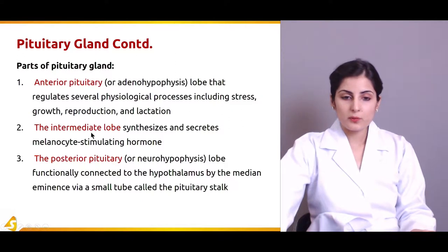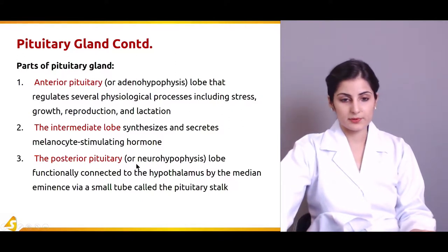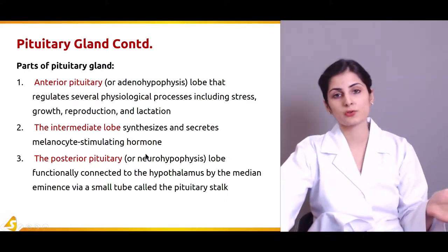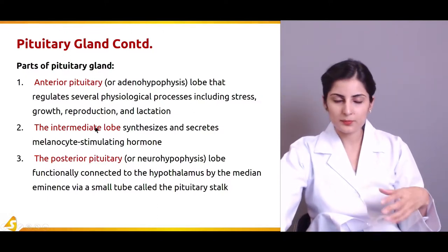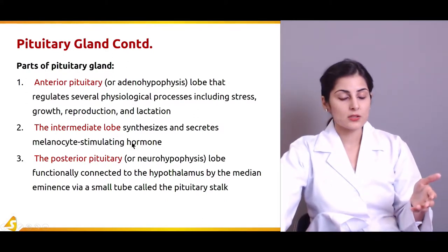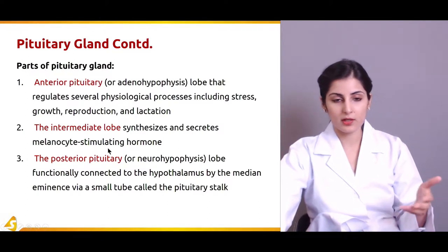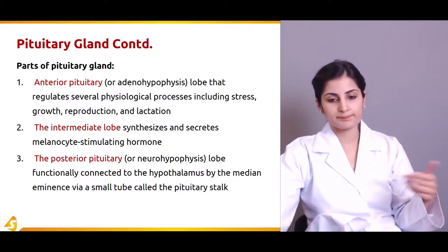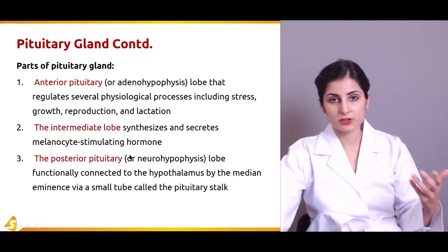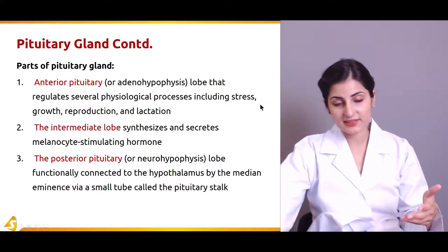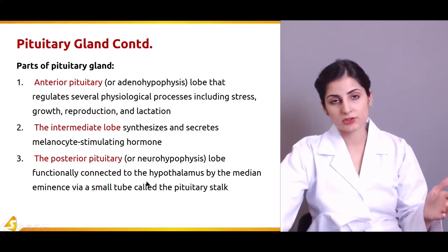The intermediate lobe is present between the anterior and the posterior pituitary. It synthesizes and secretes melanocyte-stimulating hormone, also known as MSH. In humans the intermediate lobe is considered rudimentary but it does produce MSH. MSH has three types: alpha, beta, and gamma. Alpha-MSH produces melanin in the skin, and in pregnancy the secretion of melanin increases. MSH also suppresses appetite when present in the hypothalamus.